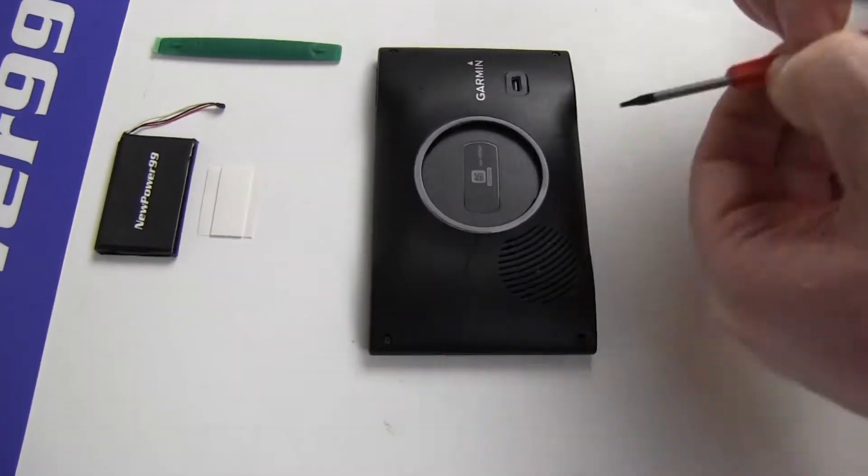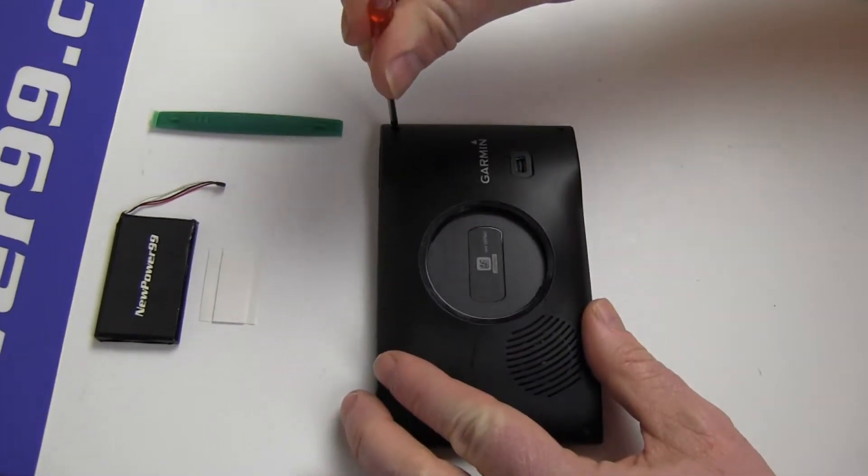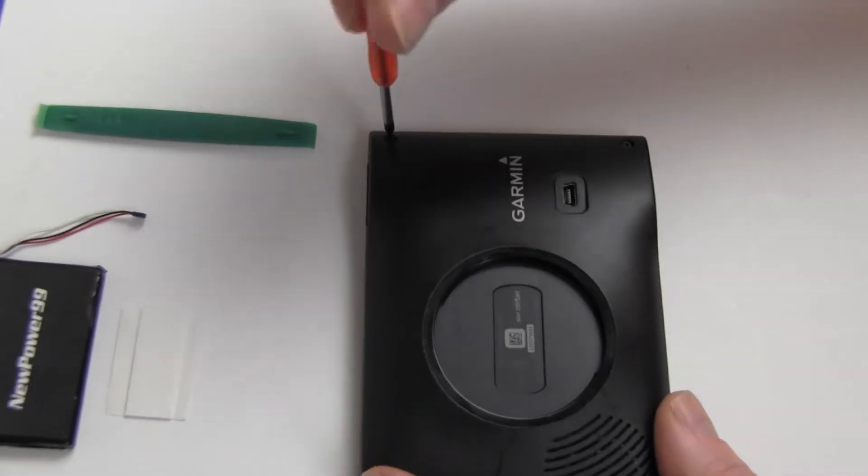Begin by using the special tool provided in your kit from NewPower99.com to remove the four screws from your Garmin GPS.